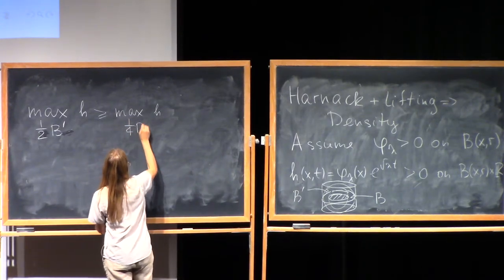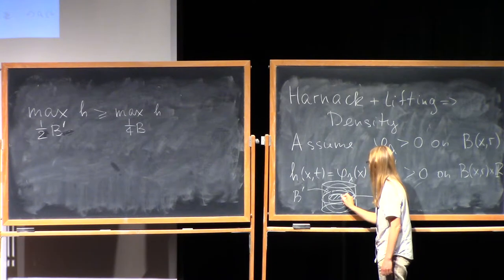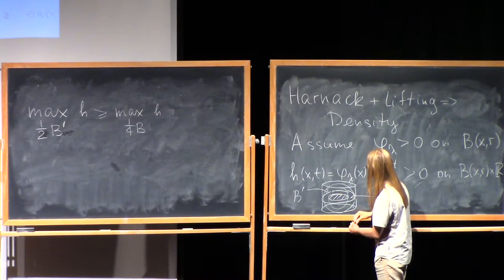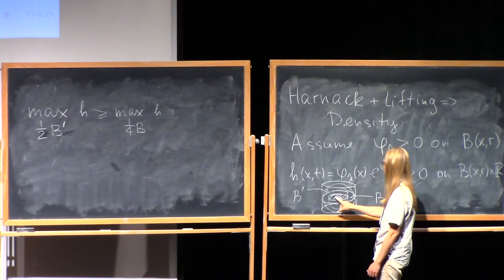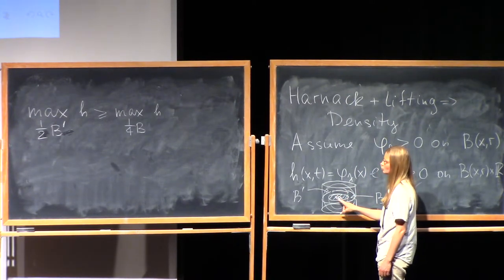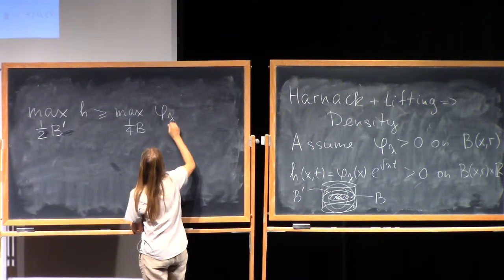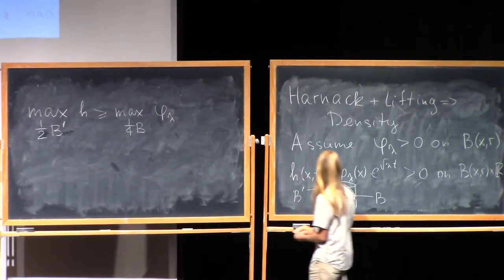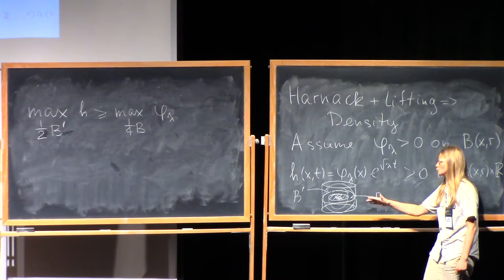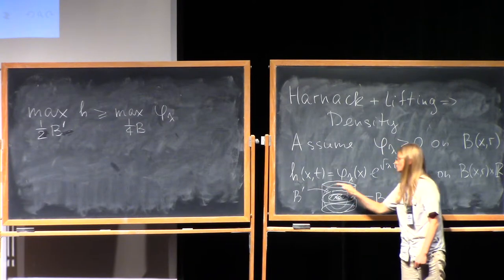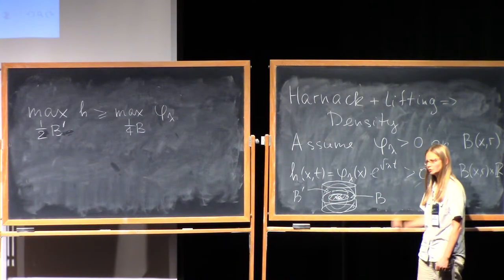The maximum of this function is larger than the maximum of the function h on this ball, one fourth of the initial b. Take even smaller ball inside, and the maximum of h is definitely larger than the maximum of phi lambda on the small one. On this plane, we multiply by one. So the function h is equal to phi on this plane, where t is equal to zero.